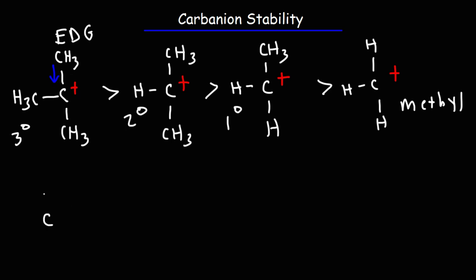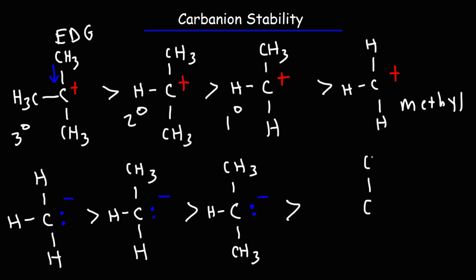So for carbanions, the methyl carbanion, this is a carbon with a lone pair and a negative charge. This is more stable than a primary carbanion. And that is more stable than a secondary carbanion. And then finally, the tertiary carbanion is the least stable in this group.